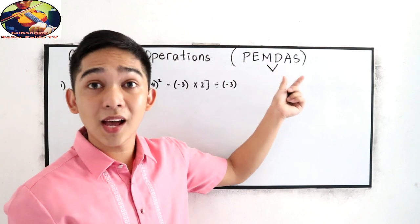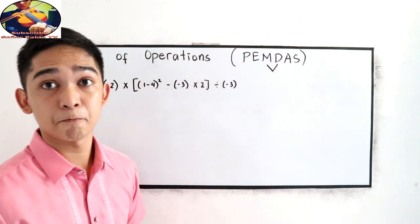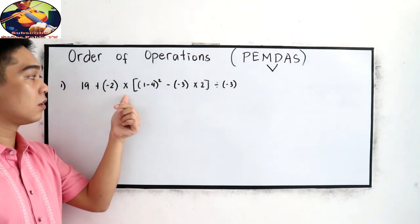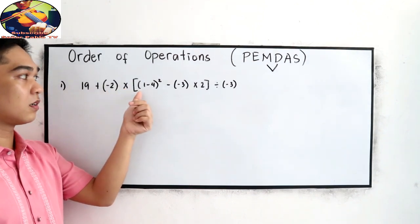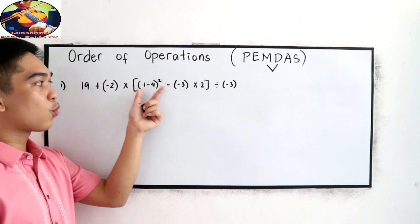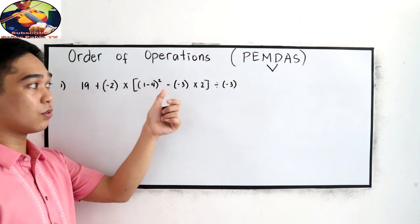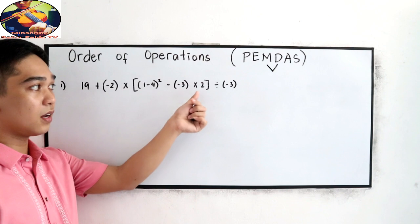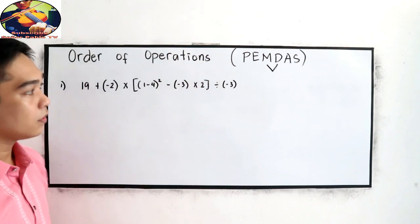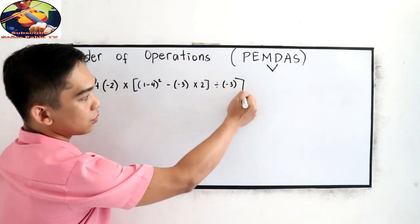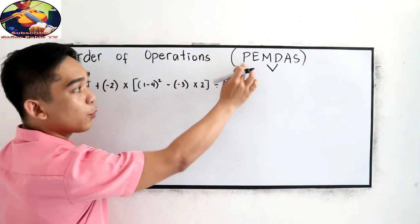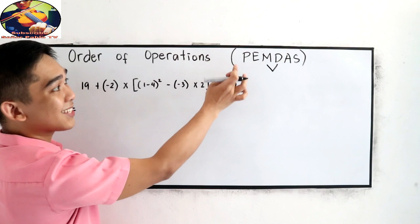Let us apply the order of operations. Let's say we have: 19 plus quantity negative 2 times, open bracket, quantity 1 minus 4 raised to 2, minus quantity negative 3 times 2 divided by quantity negative 3, then close bracket.